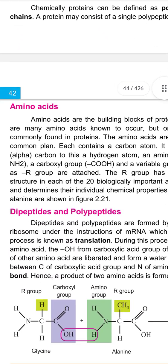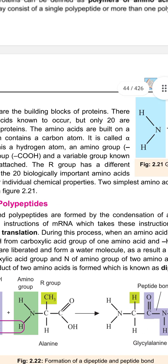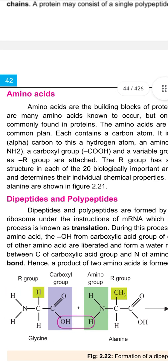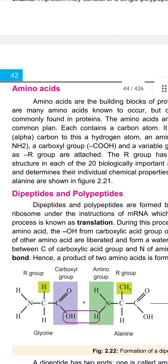Next are amino acids. Proteins are simply polymers of amino acids. Amino acids are the building blocks of proteins. There are many amino acids known to occur, but only 20 are commonly found in proteins.